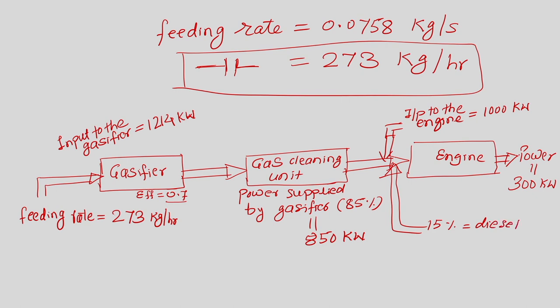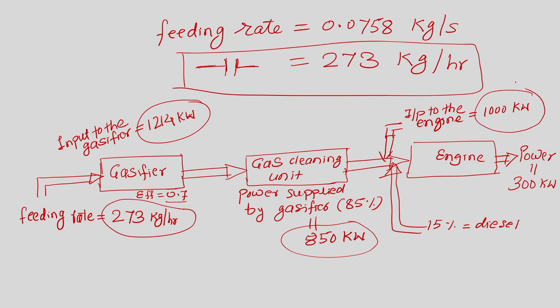Now looking at the complete schematic, we have calculated: the input to the gasifier (1214 kW), the power supplied by the gasifier (850 kW), the total power input to the engine (1000 kW), and the power output from the engine (300 kW). With this example, we understand how to calculate the biomass feeding rate when the power output from the engine is given, and conversely, how to calculate the power output when the feeding rate is given. Let us now see another example.